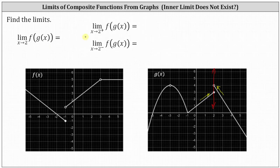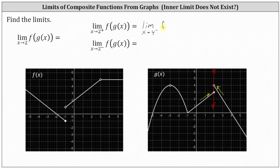So let's first determine the limit as x approaches two from the right of f of g of x. To do this, we first determine the limit as x approaches two from the right of the inner function g of x, which we can see from the graph is equal to positive four. But it's important to notice it is approaching positive four from values less than four, or from below four, indicating the limit as x approaches two from the right of f of g of x equals the limit as x approaches four from values less than four, or the negative side of f of x.